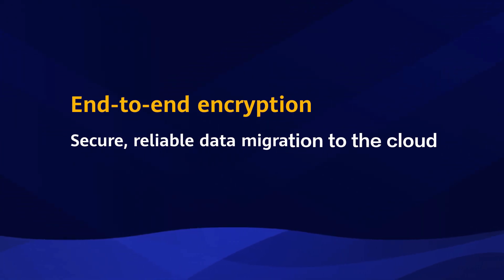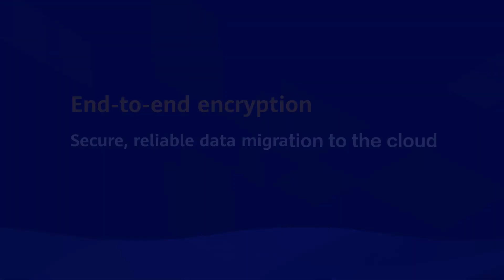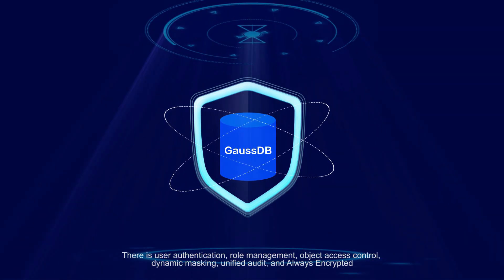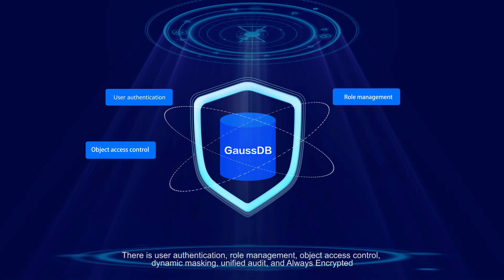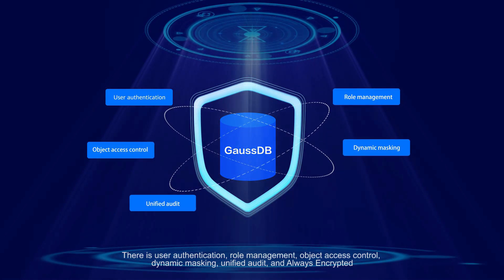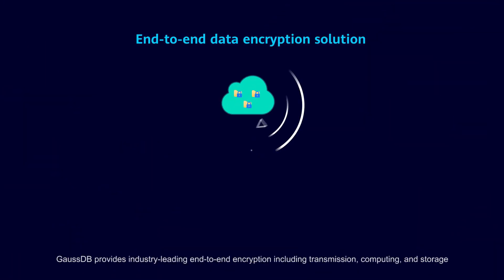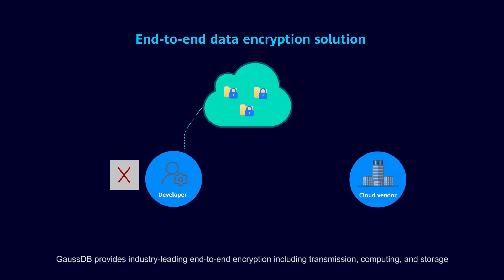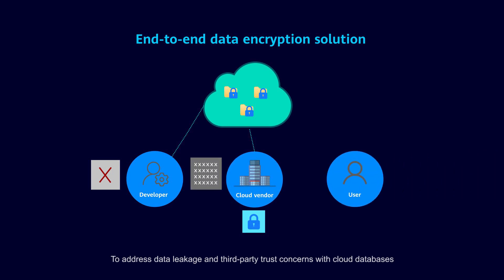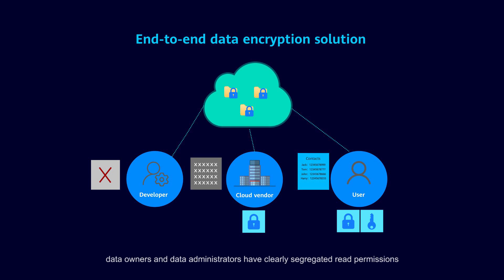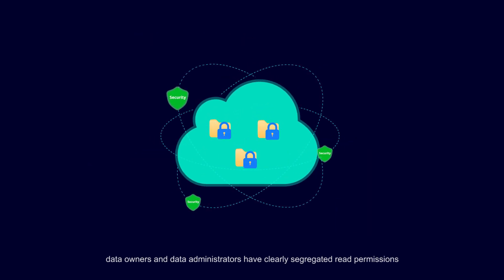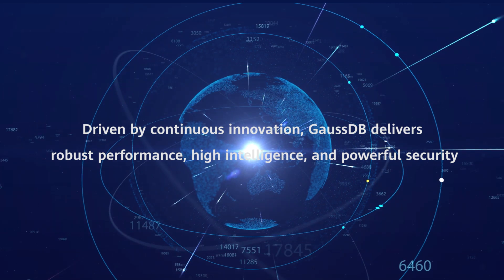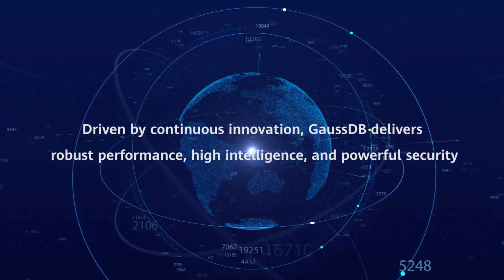End-to-end encryption — secure, reliable data migration to the cloud. GaussDB provides many different features to protect system and data security, including user authentication, role management, object access control, dynamic masking, unified audit, and always encrypted. GaussDB provides industry-leading end-to-end encryption including transmission, computing, and storage. To address data leakage and third-party trust concerns with cloud databases, data owners and data administrators have clearly segregated read permissions. Driven by continuous innovation, GaussDB delivers robust performance, high intelligence, and powerful security.